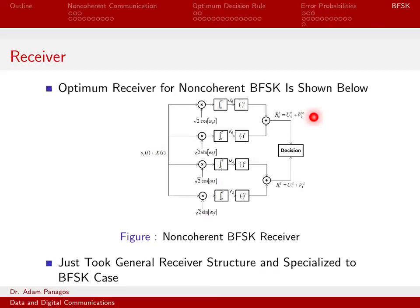Notice that nowhere in this scheme are we using the phase of the carrier. V0 does not appear anywhere in this scheme, and similarly V1 does not show up either. This will work because we went through the general analysis for decoding any binary non-coherent scheme, and this is just us specializing it to BFSK.